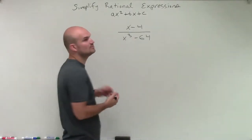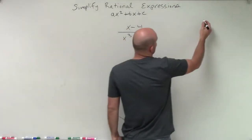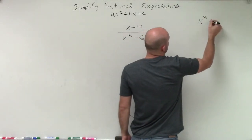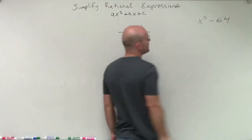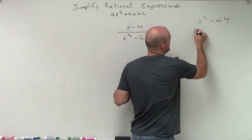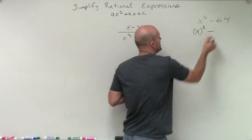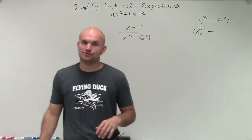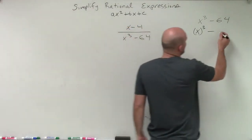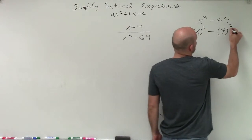So we need to determine, is x cubed a cubed number? So let's go and rewrite it over here. So x cubed minus 64. Can I rewrite x cubed as a cubed number? Of course we can. We can write it as x cubed. And then can I write 64 as a cubed number? And in this case, yes, you can. That can be rewritten as 4 cubed.